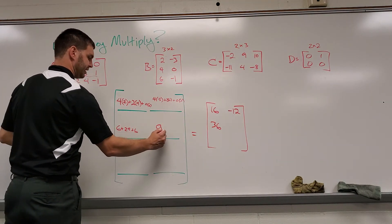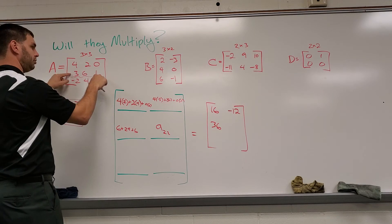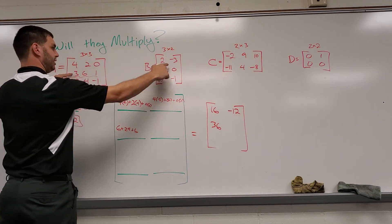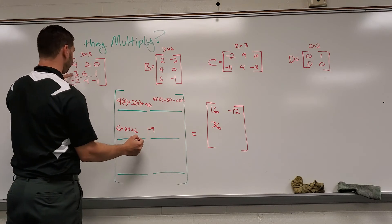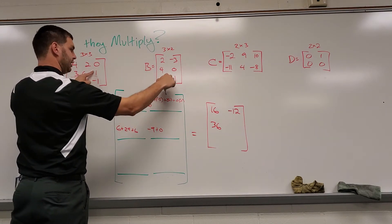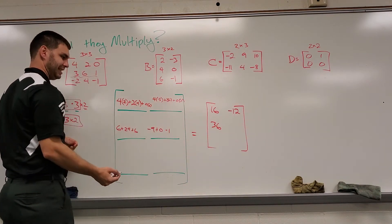This will be the next spot, A sub two two. So the second row, second column. We're going to do three times negative three, negative nine. Six times zero is zero, plus zero. One times negative one is a negative one. Negative nine plus zero minus one is negative 10.